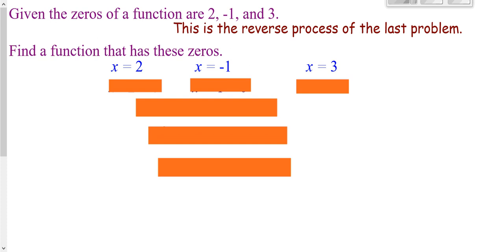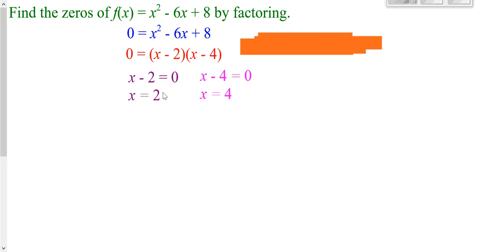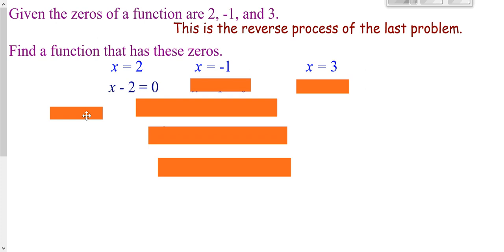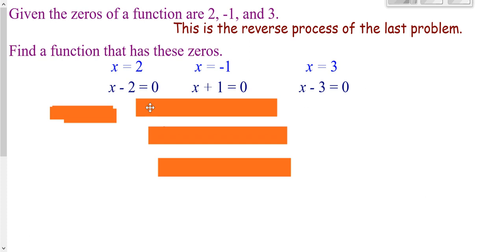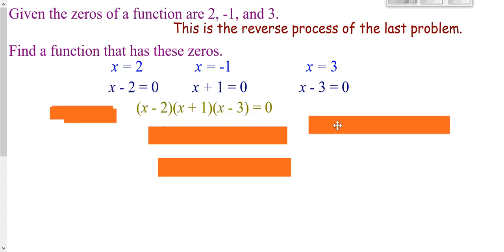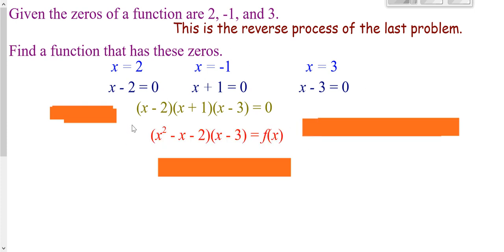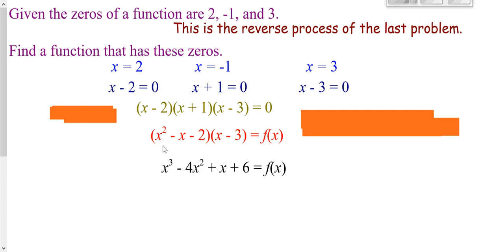Here it's kind of like a Jeopardy problem where I give you the answers and you work backwards to the question. You're asked to find the function that has these zeros. We start out with our answers. Going backwards, the first thing you did was set equal to zero: subtract 2 from each side, add 1 to both sides, subtract 3 from both sides. The things equal to zero go in parentheses. We set this equal to f of x. You could FOIL this out and get the expanded form if you wanted, or just leave f of x equals with your parentheses — either one works.